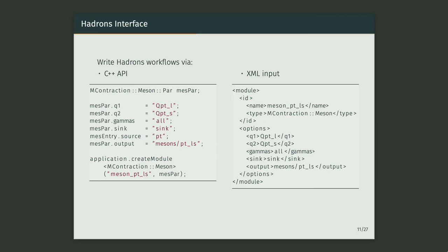How do you actually interface with Hadrons? There are two interfaces at the moment. We have a C++ API, which is currently the recommended approach. There's also an XML input, which is very good for small test jobs where you don't mind writing out each module explicitly. Here's a quick example of how you might create a meson two-point function, essentially filling in fields as dependencies from previous modules or other modules run in the job.